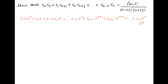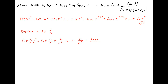Now replace x with 1/x in equation 1. We get (1 + 1/x)^n is equal to C0 plus C1/x plus C2/x² plus and so on, plus Cr/x^r plus C(r+1)/x^(r+1) plus C(r+2)/x^(r+2) plus and so on, and the last term is Cn/x^n. Let's call this Result 2.